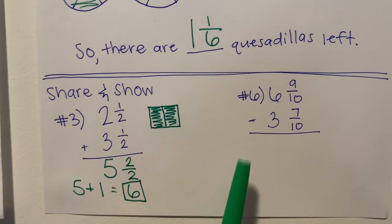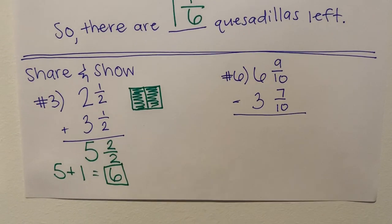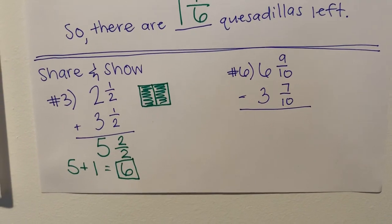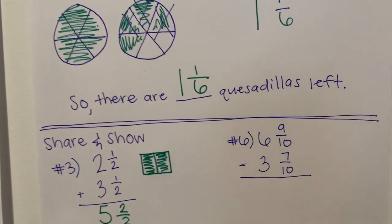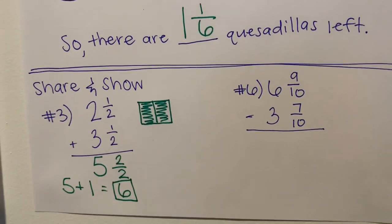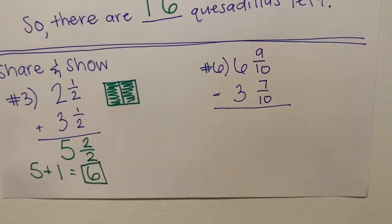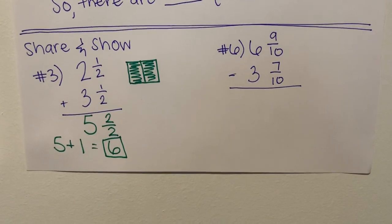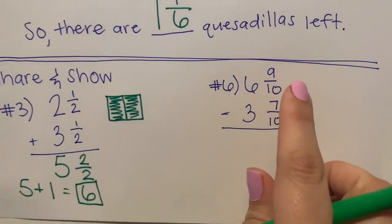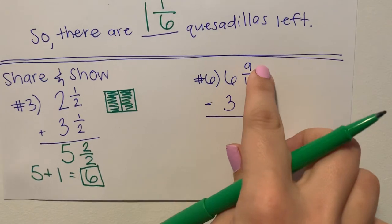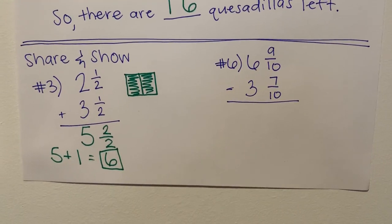Now for number six, first thing I need to do is check my operation. My operation is subtraction for number six. So again, I want to make sure that I'm following those steps to make sure I'm subtracting my mixed numbers correctly. So I'm going to start with my fractional parts. I'm doing nine tenths minus seven tenths.